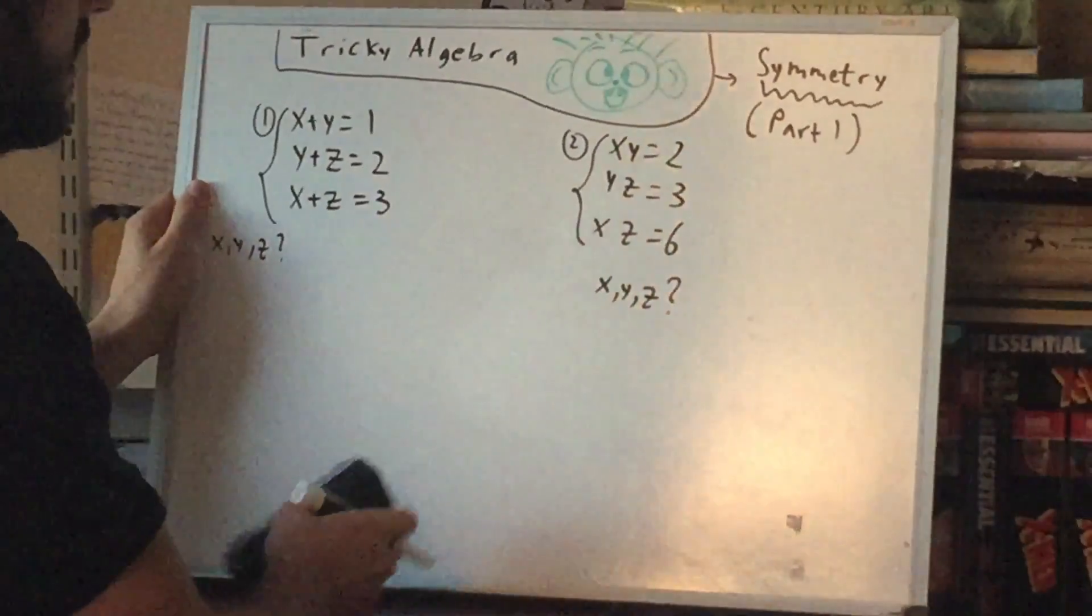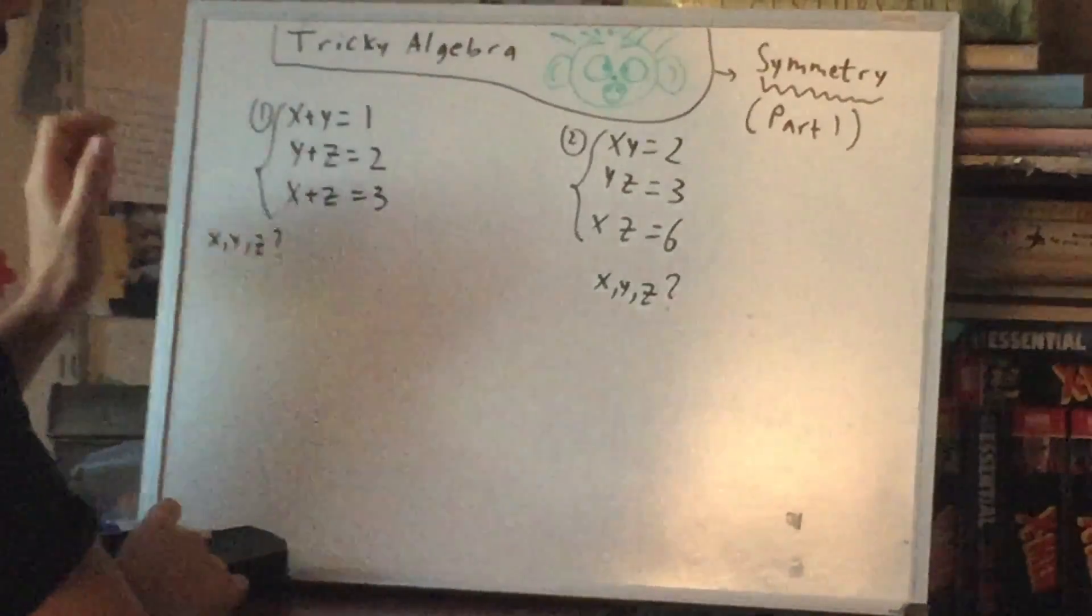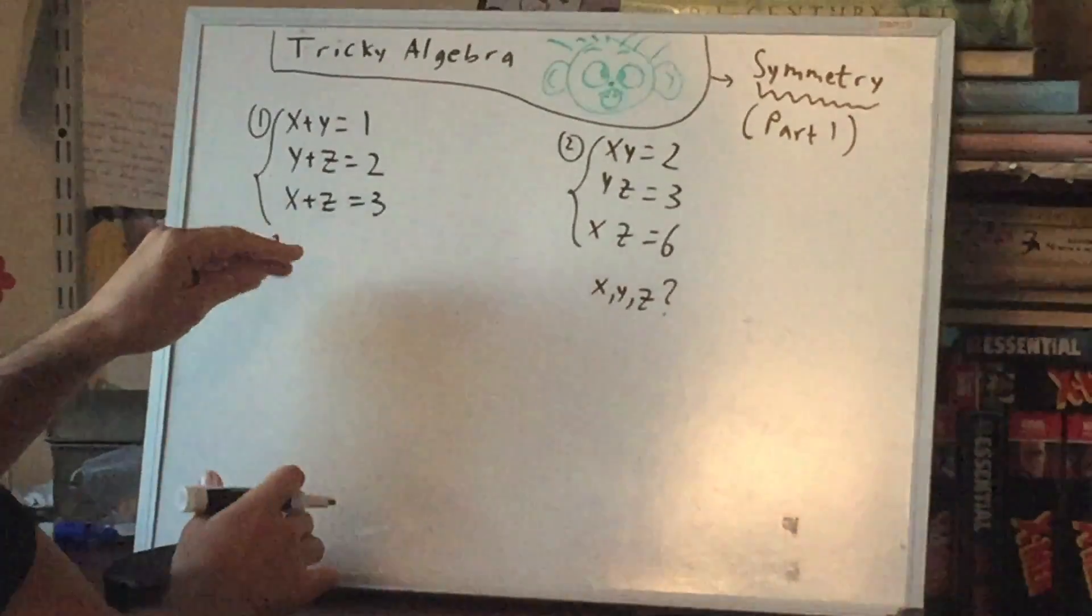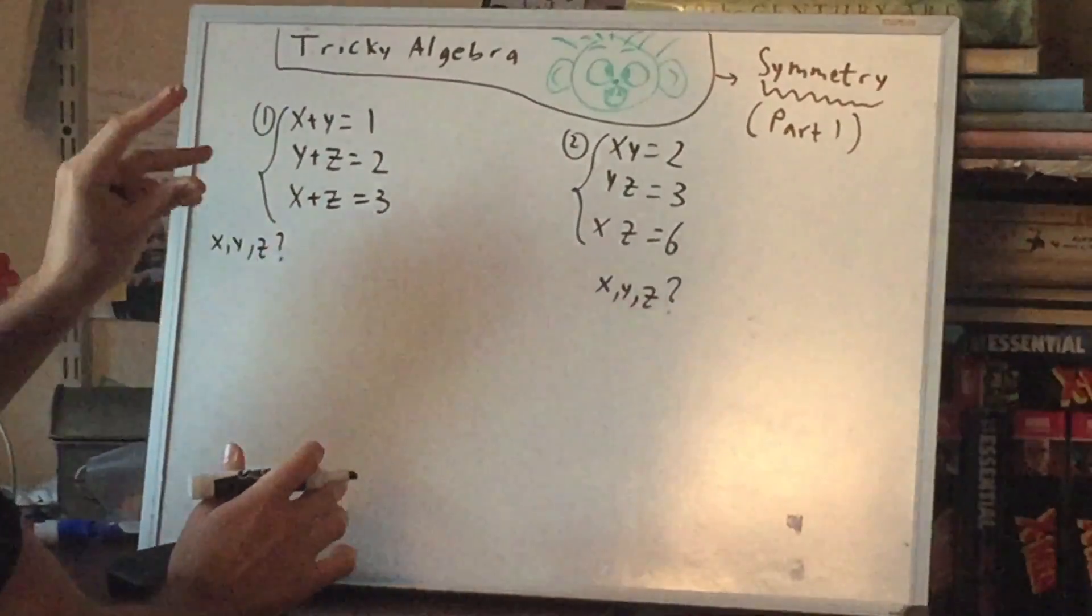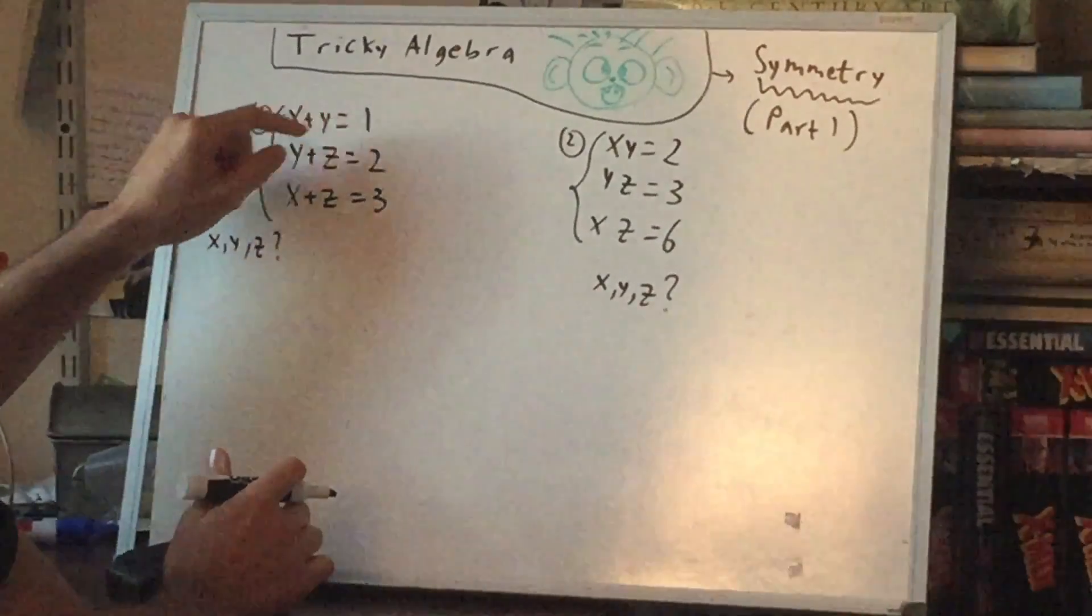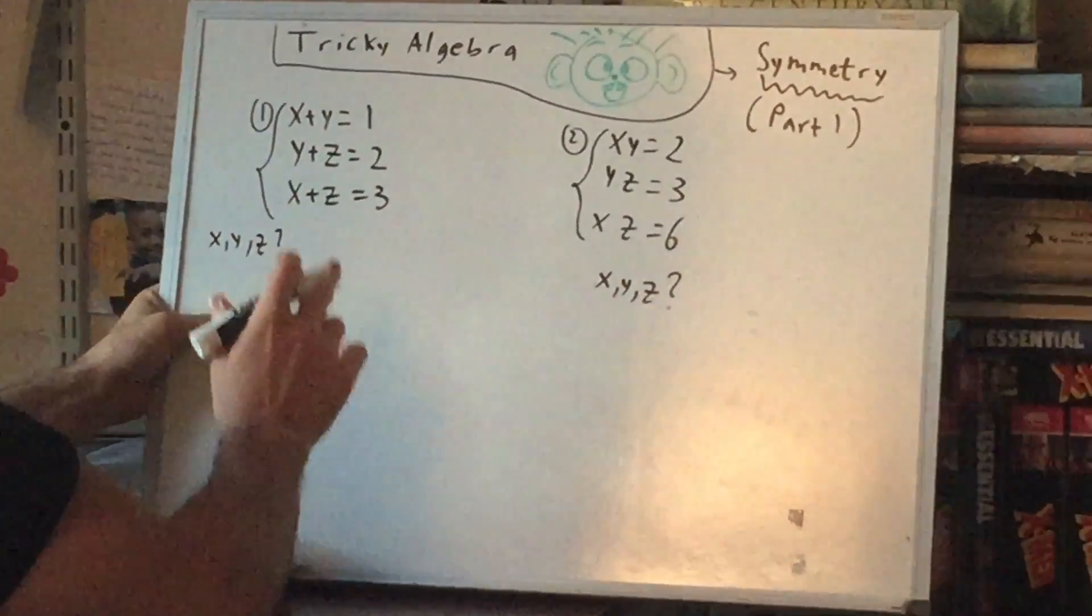So, since today's topic is symmetry, what's symmetric about this? The thing that's symmetric is that there are two of everything. There's two x's, two y's, and two z's. So that's a clue.